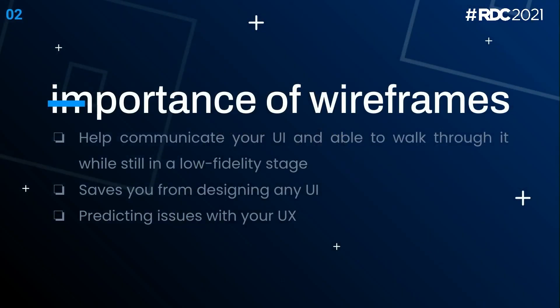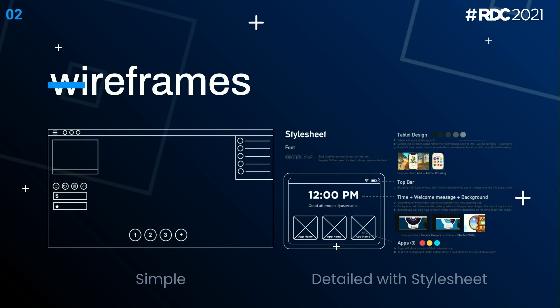Wireframes are probably your best friend when designing UI and a key thing that should be considered. They help communicate your design to another developer if you're stuck, and save you from wasting time on UI that might not work on the UX side. You can predict issues that arise and get a rough mock-up before fully committing. This example shows a simple wireframe versus an actual detailed style sheet with fonts — it's way easier to use.